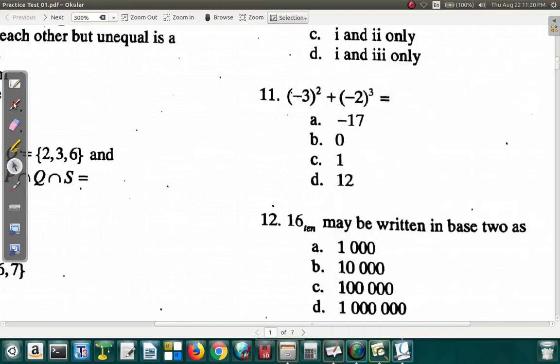We're on to question 11. Negative 3 squared plus negative 2 cubed is equal to, now let's see what we get for that. Negative 3 squared, what it really means is negative 3 times negative 3.